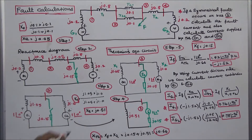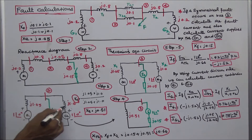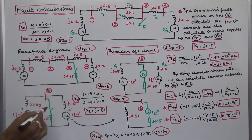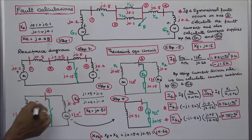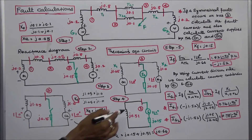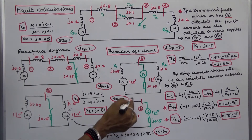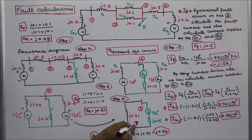Step 4: we have to simplify this network further. These two branches are connected in parallel: J1.05 multiplied by J1.0, divided by J1.05 plus J1.0. The effective reactance is J0.51. We then draw the Thevenin equivalent circuit, where this is the effective reactance J0.51.